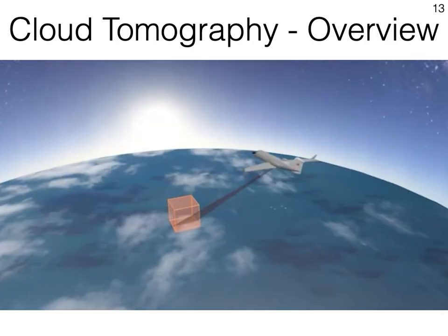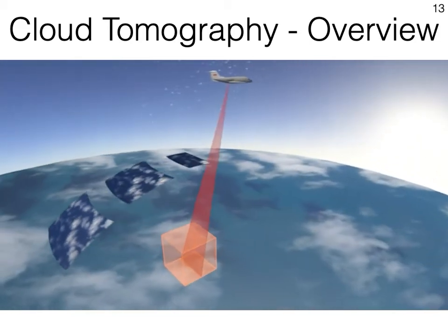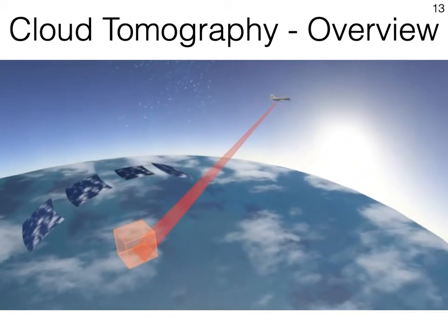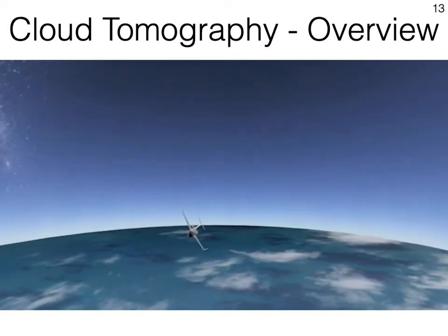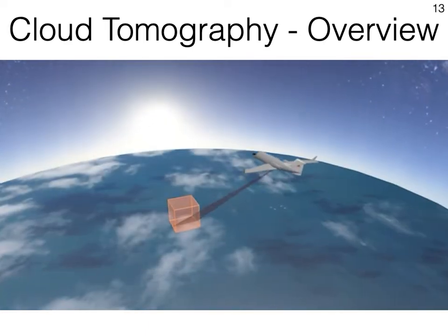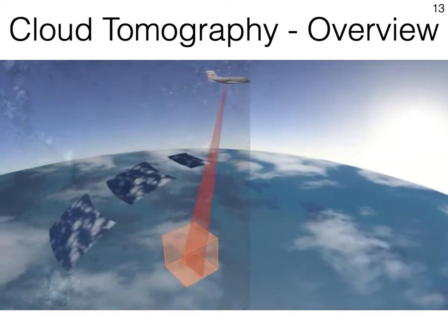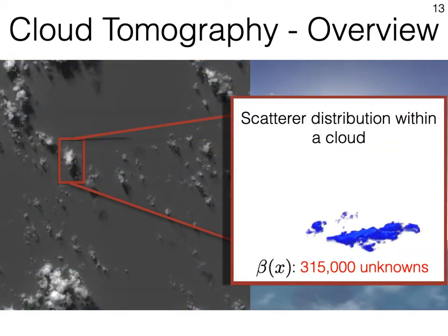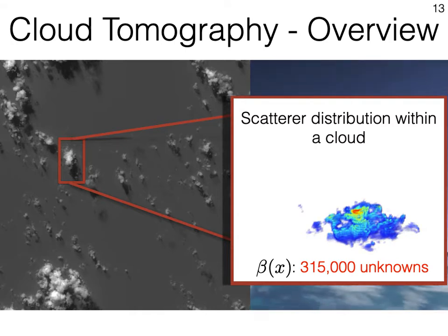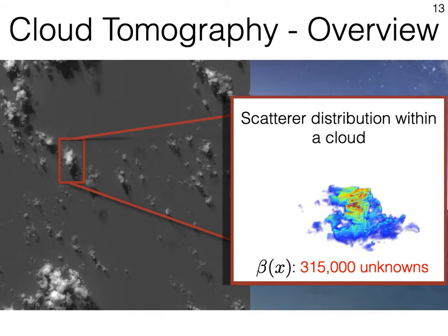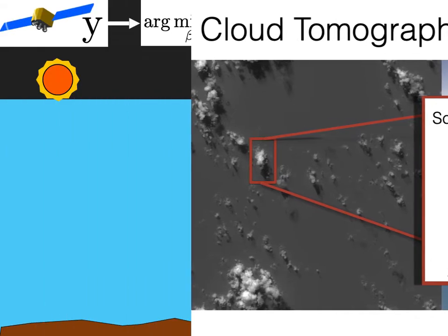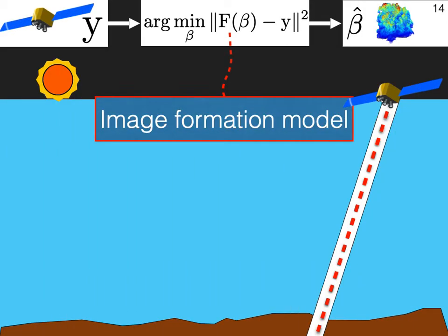AirMISP is a push broom sensor carried on board the NASA high-altitude ER-2 aircraft that is able to acquire nine viewpoints of the same cloud. Using these multiple views of a cloud, we seek to find the 3D volumetric distribution, that is, how dense is each voxel within the cloud. We formulate an inverse problem where we fit an image formation model to these measurements. Now, before I describe how we solve this minimization, I want to briefly describe the image formation model.